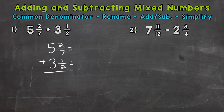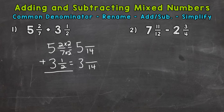We'll put an equal sign. We have 5 and how many fourteenths, and then 3 and how many fourteenths. Well, we know 7 times 2 gives us 14, so we need to do the same thing to the top. We're doing the same exact thing we do when we add fractions — we just have a whole number in front. So 2 times 2, do the same thing to the top: 2 times 2 is 4. So 2 sevenths is equivalent to 4 fourteenths. Now for the half: 2 times 7 is 14, so do the same to the top to keep it equivalent. 1 times 7 is 7.